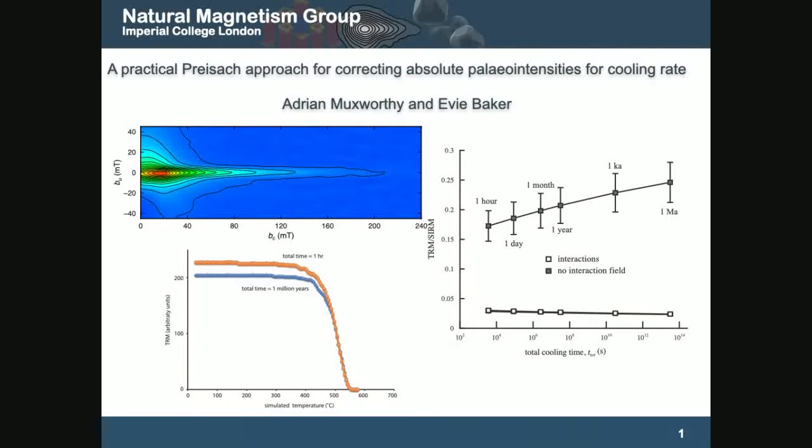One of the things we did was to look at the effect of cooling rate. The Preisach theory is based on interacting single domain theory. Most theories that we work with are based on non-interacting. One thing that we noticed, this figure on the right here is from 10 years ago, we noticed that the cooling rate, rather than increasing the intensity as the cooling rate increases, intensity actually slightly decreases if we have an interacting system. This has been backed up by micromagnetic models for systems.